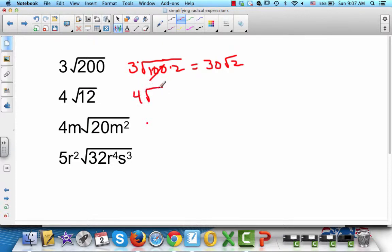So we've got 4 square root of, and you break it down into 4 times 3, which gives you, and square root of 4 is 2. So 2 times 4 is 8 square root of 3.